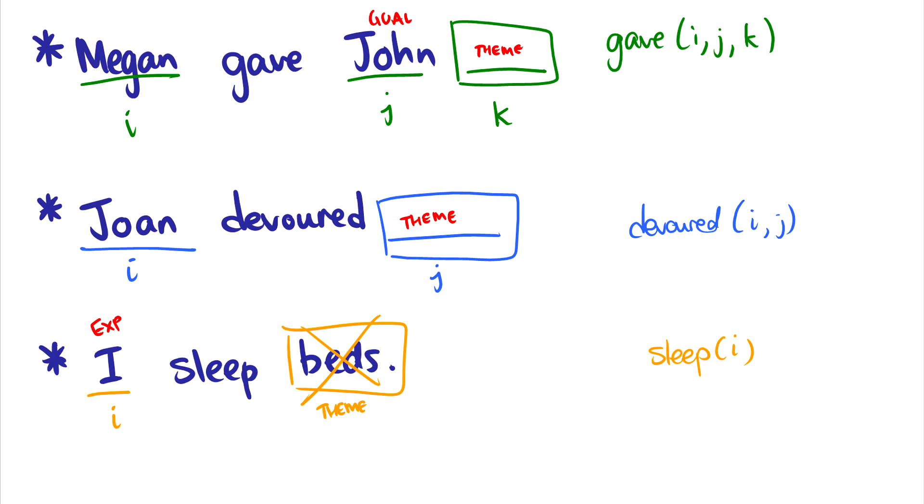So we have some violations here. The first and second, well, we're missing theta roles. So that's a violation. In the third example, we have too many theta roles. So that's another violation. Okay, that is theta roles in the theta criterion.